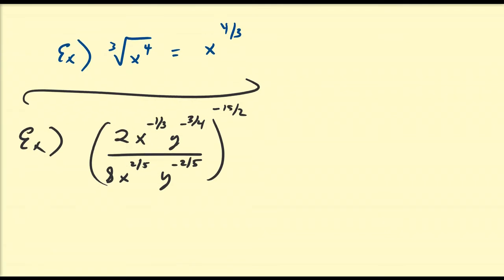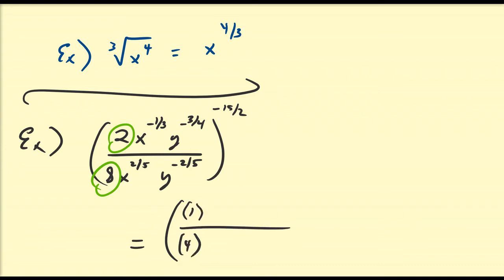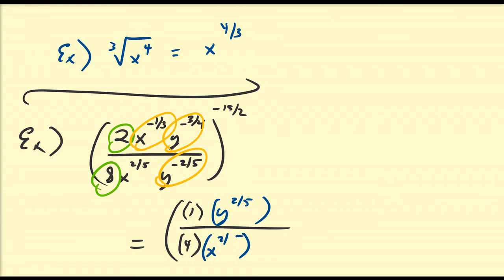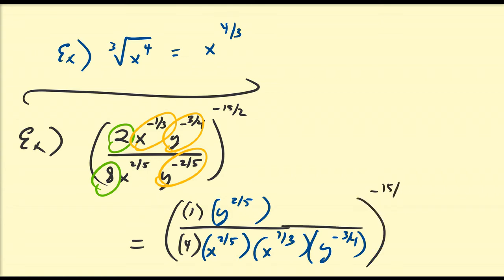Alright, so I'm going to begin by simplifying this fraction here. That's going to give me one-fourth. Then I'm going to flip everything with a negative exponent. The x and y on top are going to go to the bottom, and the y on the bottom is going to go to the top. So that gives us y^(2/5) positive on top, and on the bottom I'm going to have x^(2/5) that was there before, plus x^(1/3), and then y^(3/4). All of that is raised to the power of negative fifteen-halves.